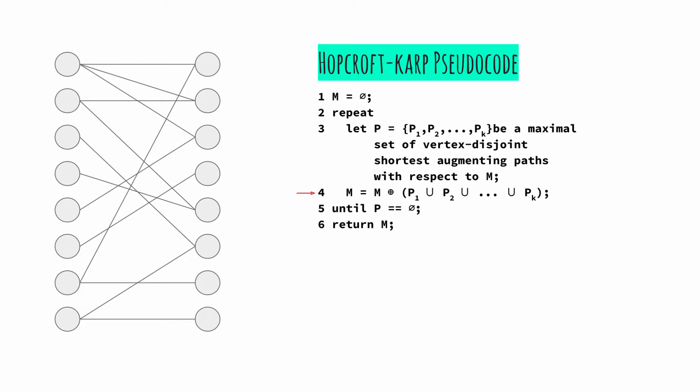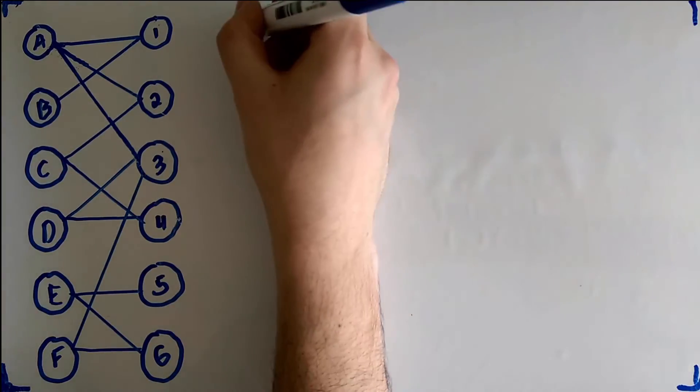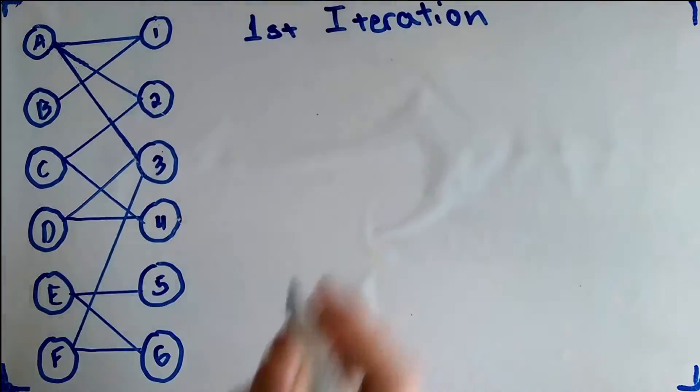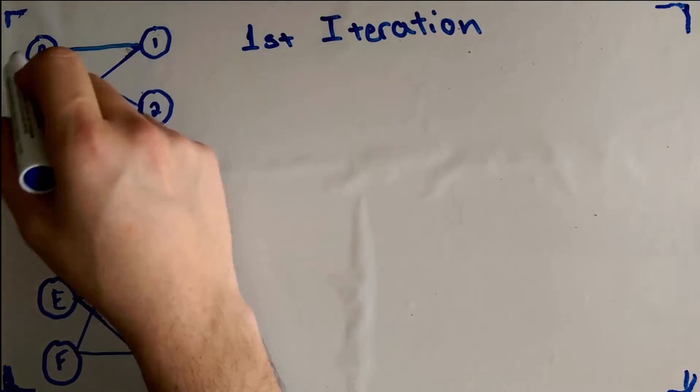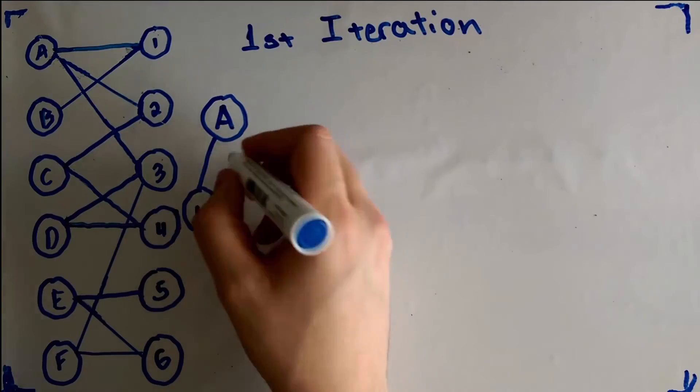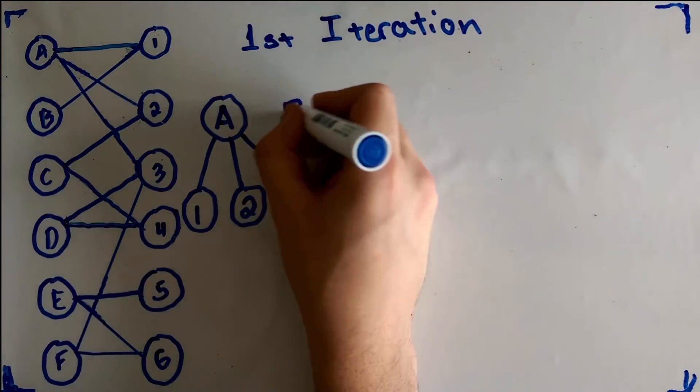The process of finding all the vertex disjoint shortest length paths can be implemented using breadth first search. The algorithm starts traversing the graph from unmatched vertices from the left set. Since this is the first iteration, all of the vertices are unmatched. Let's start with the tree for A. A has three edges leading to 1, 2 and 3.